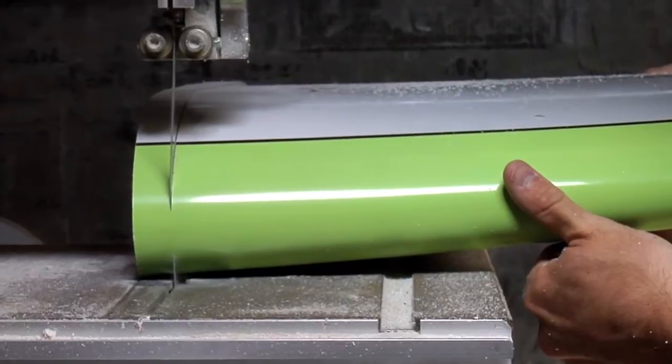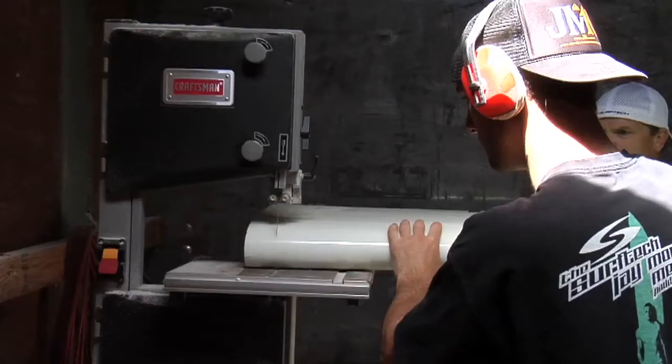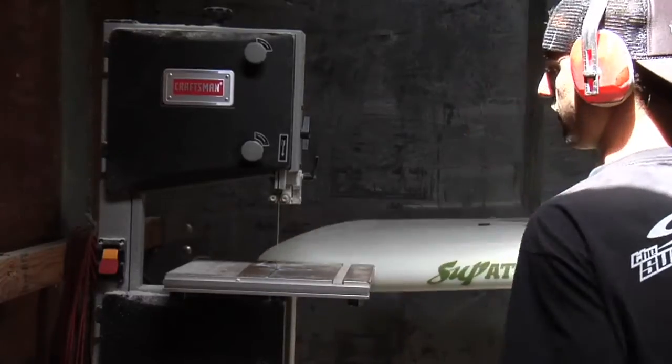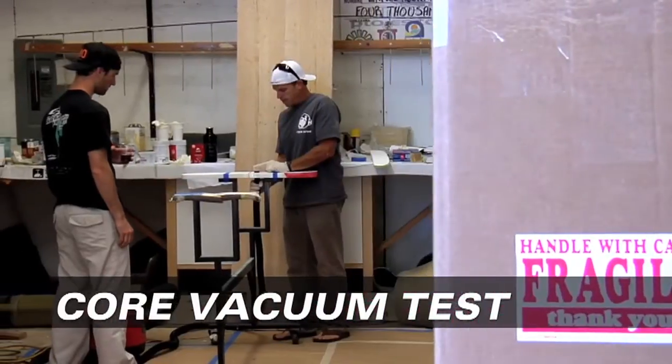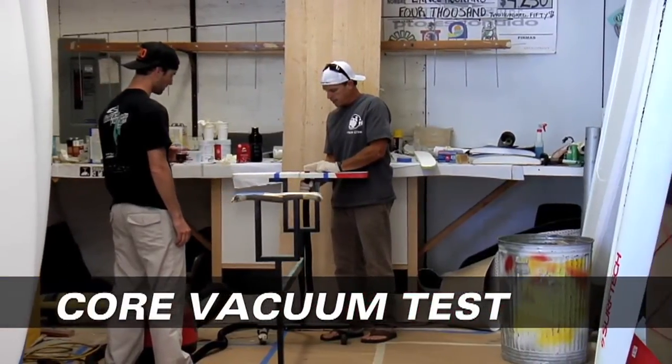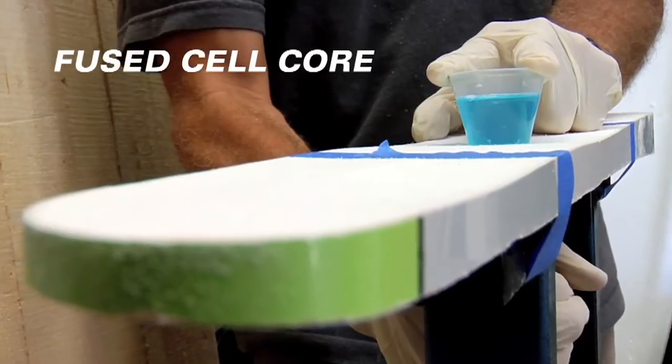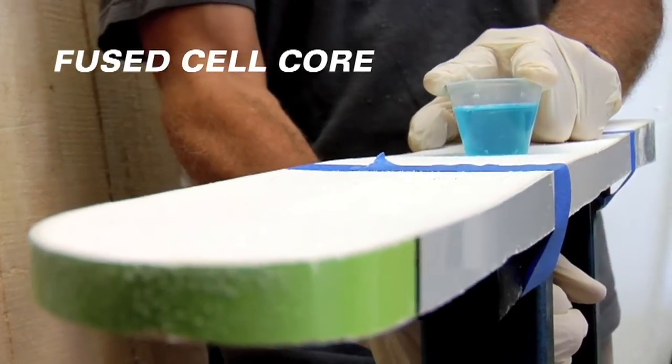We've tested our fused cell EPS cores against other major composite boards using a variety of tests, including a core vacuum test, and found that Surf Tech's fused cell EPS is one of the few EPS cores that will not soak in water.